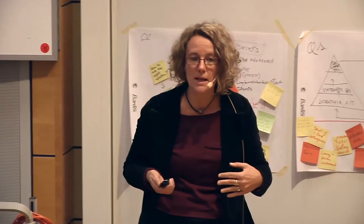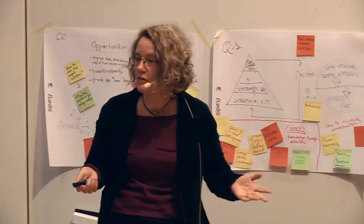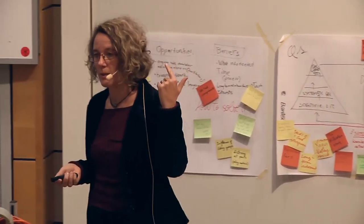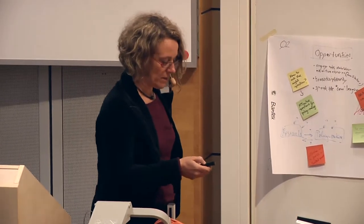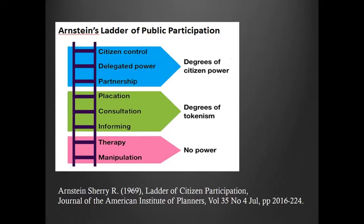Whether you are a social scientist or a natural scientist, you need to think about this — it's really important. Going back into history: in 1969, a man called Arnstein created what is called the participatory ladder, which describes different degrees of interaction with stakeholders.